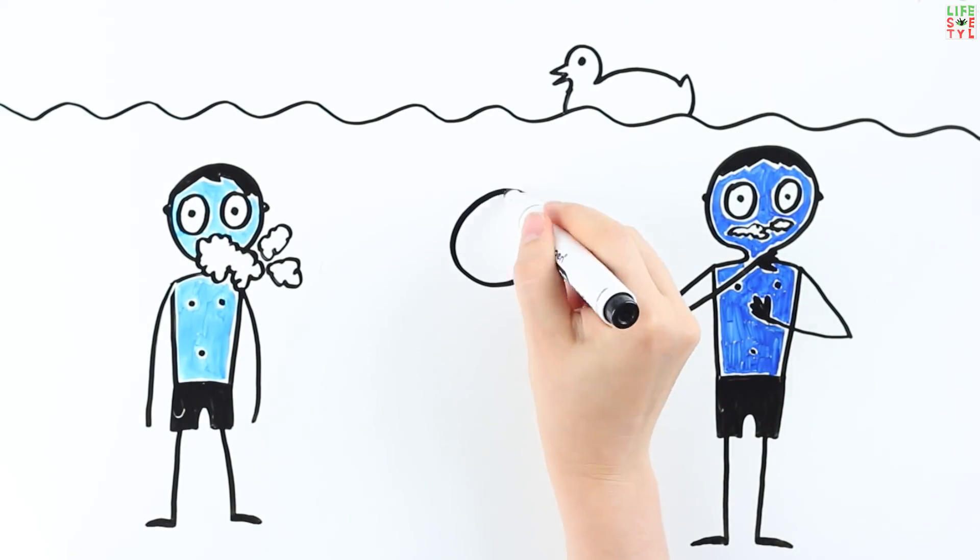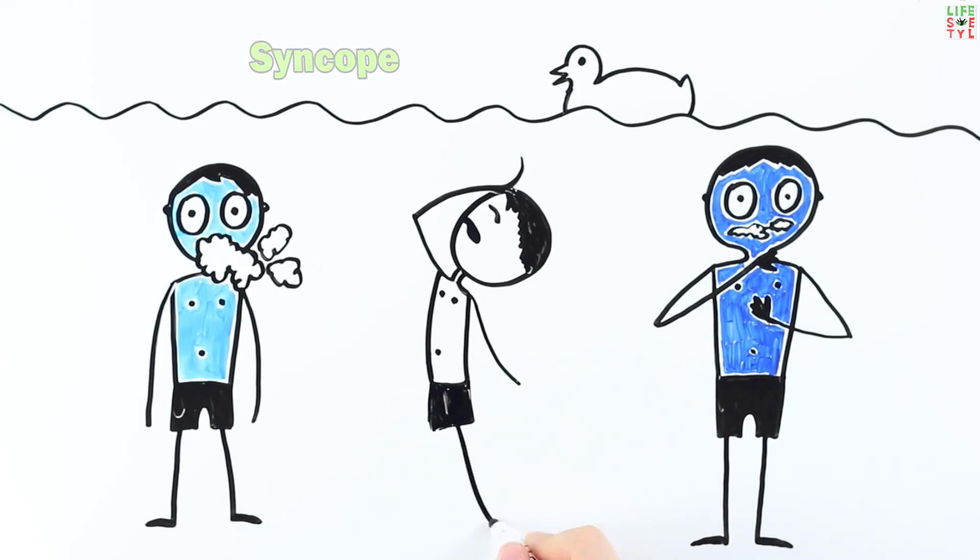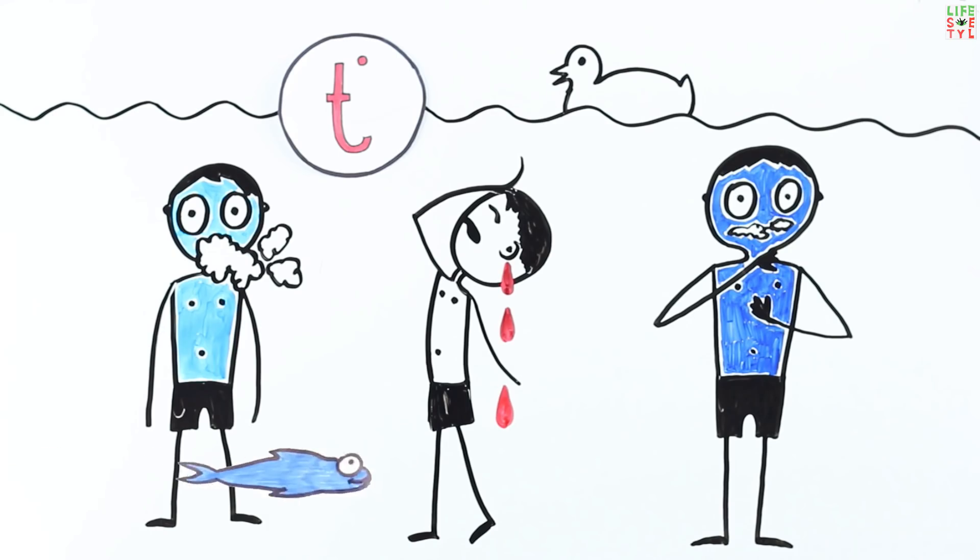In some cases, drowning occurs as a result of fainting while in water. A sharp temperature drop from immersion in cold water or water damage to the eardrum could cause this loss of consciousness.